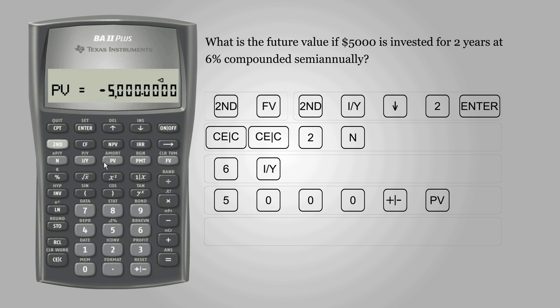To find the future value, press CPT for compute and then FV for future value. As you can see, FV or future value is a positive number, which shows that this amount can be received in future.